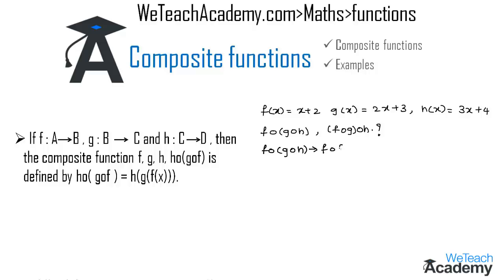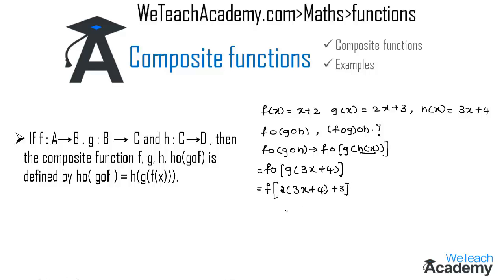f circle g circle h is defined by f of g of h of x. We can write h of x as 3x plus 4. Now finding g of 3x plus 4 by replacing x with 3x plus 4, we get f of 2 into 3x plus 4 plus 3. Multiplying gives f of 6x plus 8 plus 3, which is f of 6x plus 11.